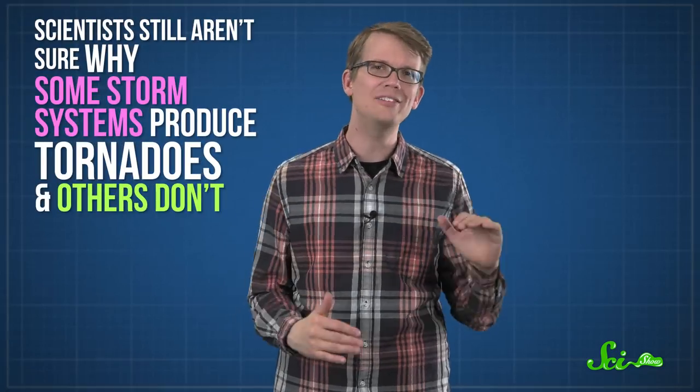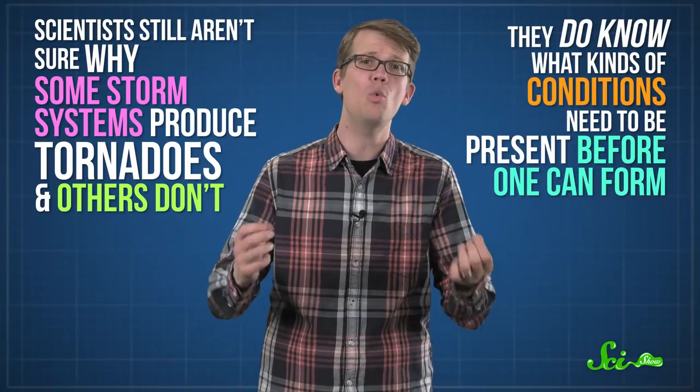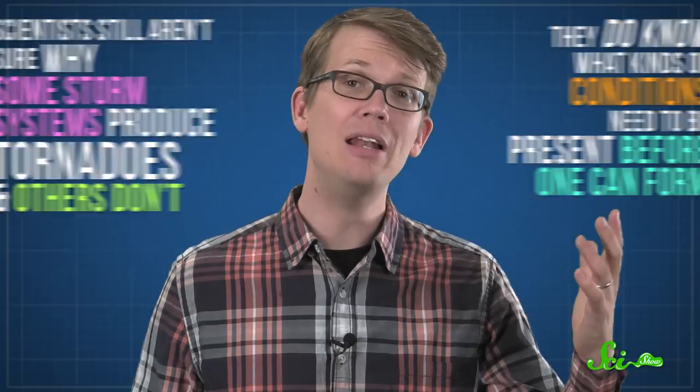Scientists still aren't exactly sure why some storm systems produce tornadoes and others don't. But they do know what kinds of conditions need to be present before one can form. Mainly, they need currents of rotating air.